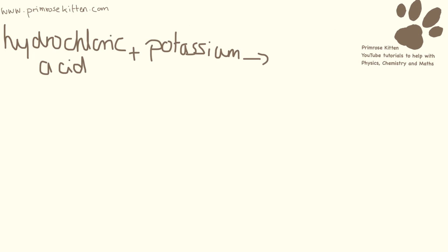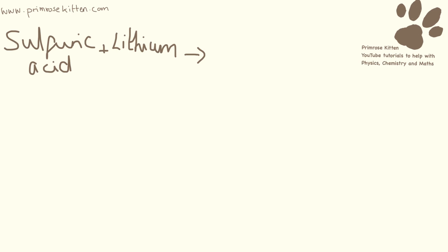Hydrochloric acid and potassium. We're again going to get salt and hydrogen. So that is going to be potassium chloride and hydrogen. Sulfuric acid and lithium gives lithium sulfate plus hydrogen.